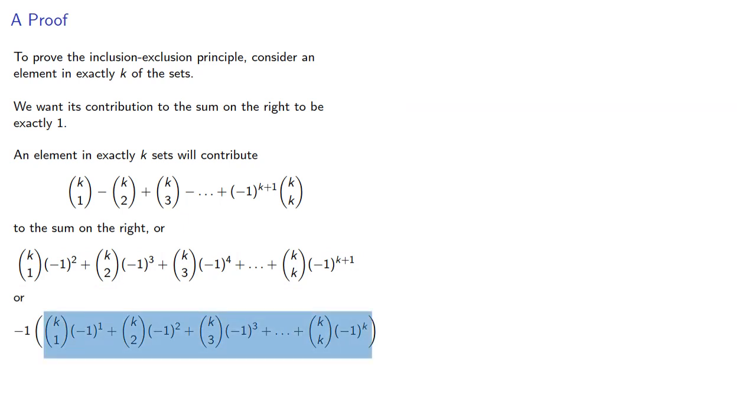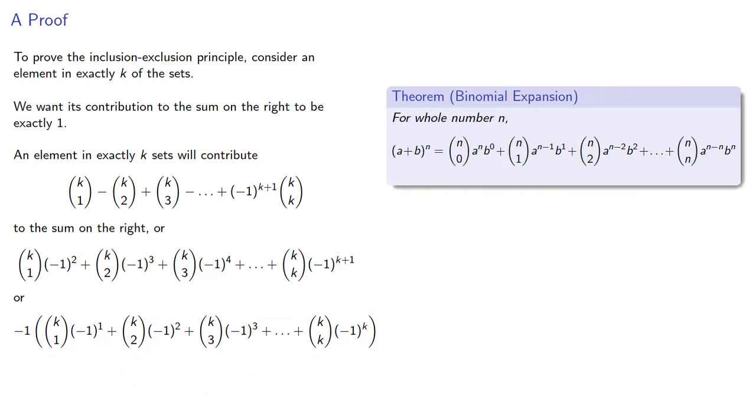Now if we stare at the terms inside the parentheses for a moment, we are reminded of the binomial expansion. So let's rewrite our terms here. Remember the binomial expansion includes a factor of a to some power where the sum of the exponents is equal to n. We can always include a factor of 1 to some power, so let's include a factor of 1 to some power where the exponents add to k.